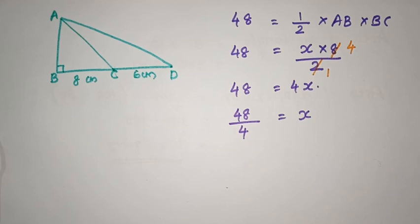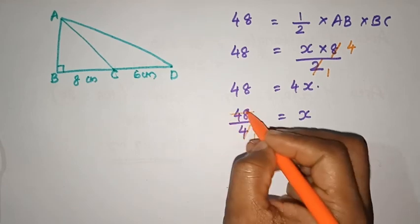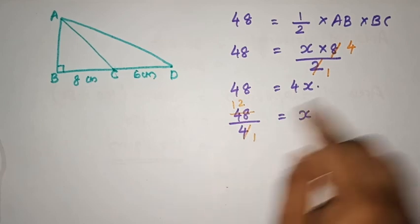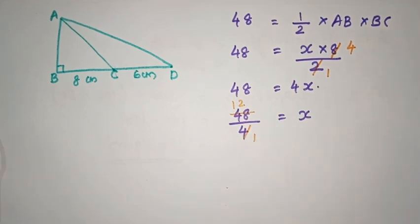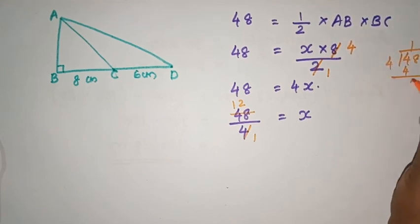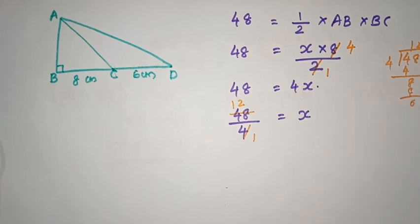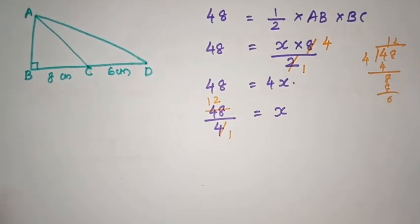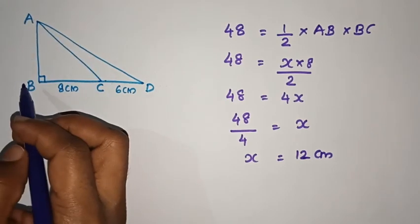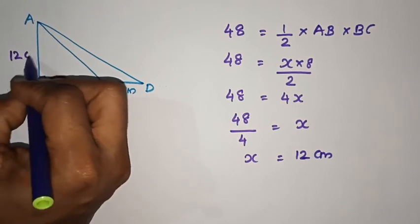So, x is 48 by 4. We cancel: 4 into 12. So x is 12 centimeters. So x becomes AB. AB is 12 centimeters.